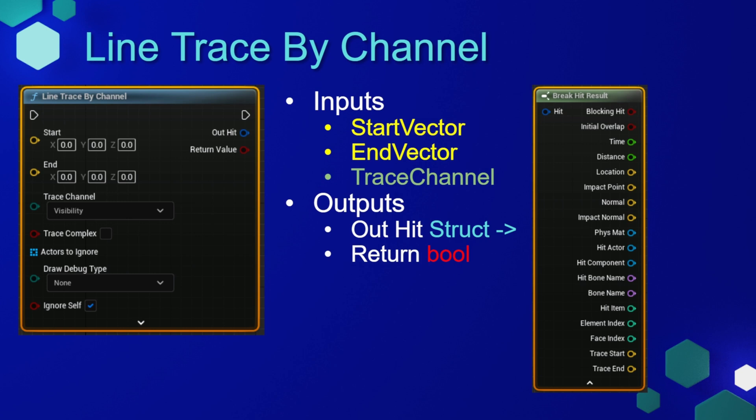On the output side, it has an out hit struct, and a struct is another type of variable we haven't seen yet. A structure is basically a group of variables that can all be contained in one output variable or one input variable, and we can see the results of that hit struct. There are multiple outputs contained in one variable. We'll deal with structs more in a future lesson, but this should be enough to understand what's going on here at least.